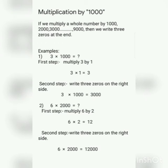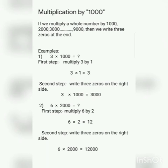Now, multiplication by 1000: if we multiply a whole number by 1000, 2000, 3000, and so on up to 9000, then we write three zeros at the end. For example, 3 multiplied by 1000 — in the first step we multiply 3 by 1 to get 3, then write three zeros on the right to get 3000. In the second example, 6 multiplied by 2000 — we multiply 6 by 2 to get 12, then write three zeros on the right to get 12,000.